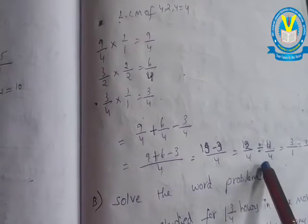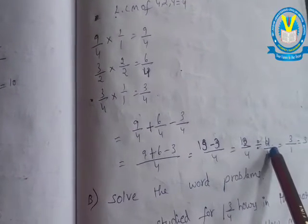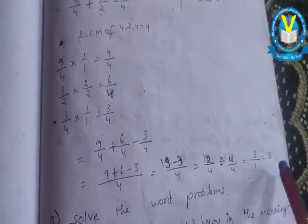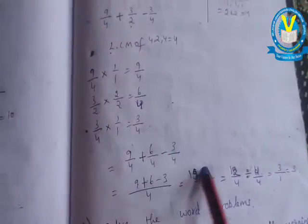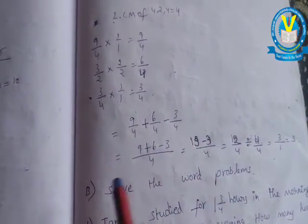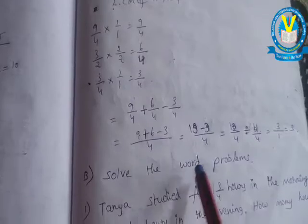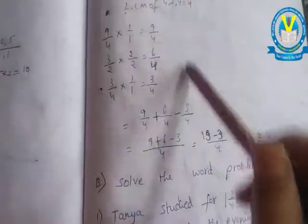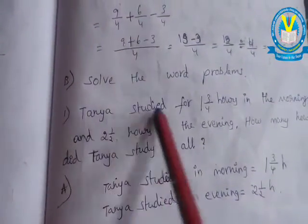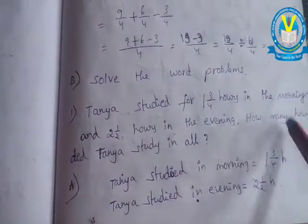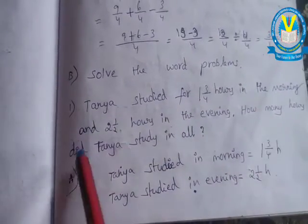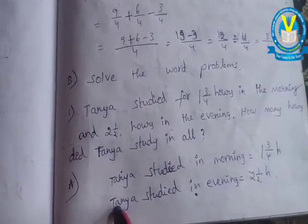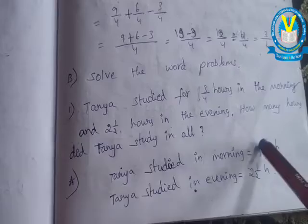Next, go to the B section - solve the word problems. The same process. Tanya studied for one and three-fourths hours in the morning and two and one-half hours in the evening. How many hours did Tanya study in all?